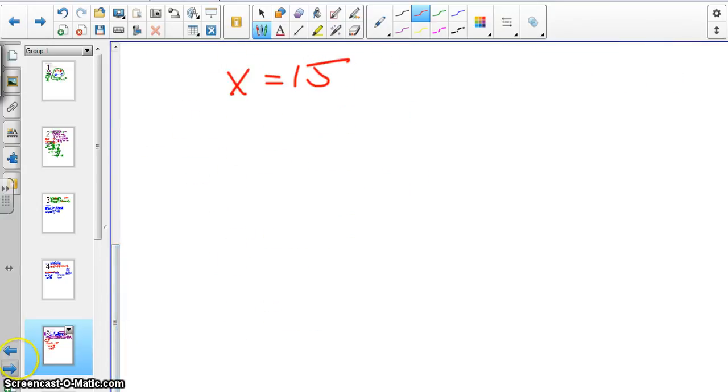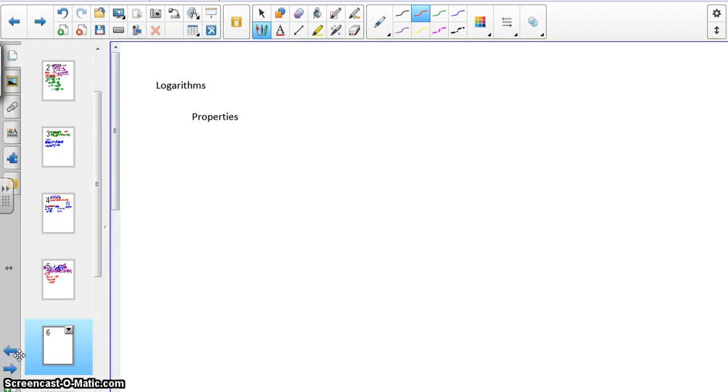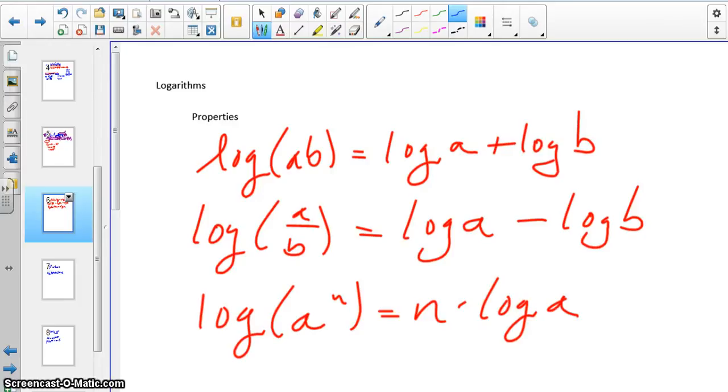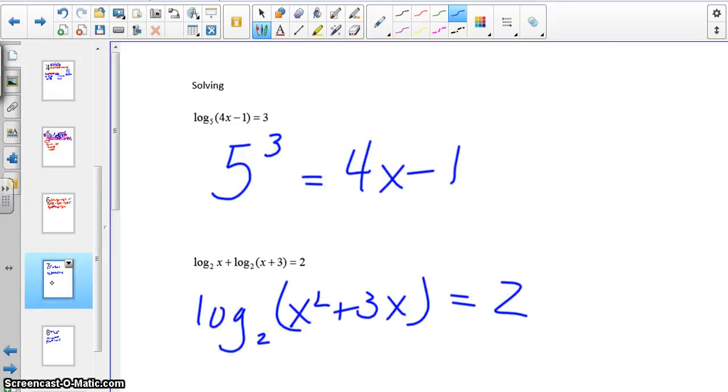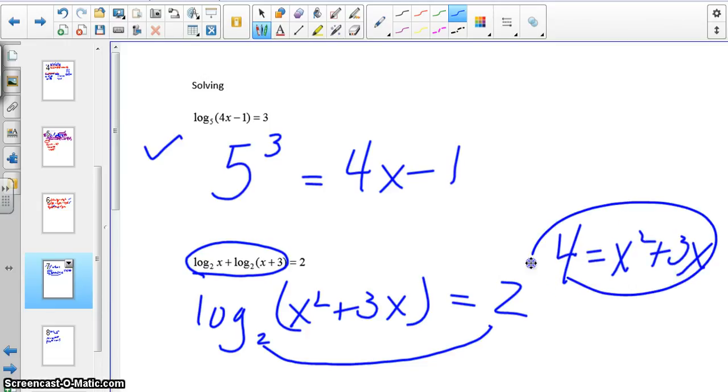And then the last thing I wanted to talk about real quickly has to do with logarithms. So these are some log properties. Multiplication turns to addition. Division turns to subtraction. Exponents come down in front. We can use these in problems like the following. This first one, you rewrite into exponential notation and solve from there. The second one, you use the log properties I mentioned. So addition becomes multiplication, and then we'd say 2 to the second, which is 4, so 4 equals x squared plus 3x. That's how we would proceed.